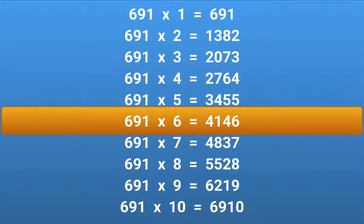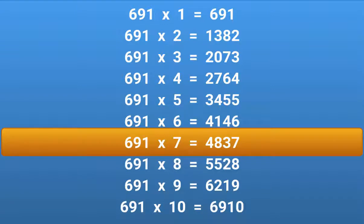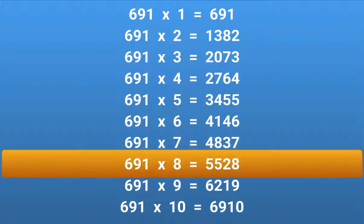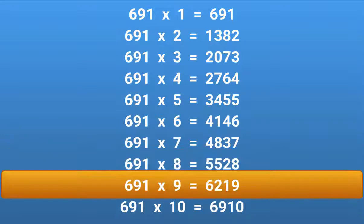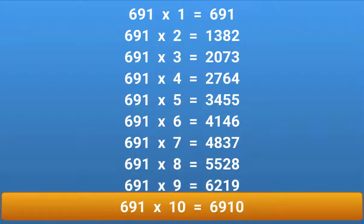691 × 6 = 4146. 691 × 7 = 4837. 691 × 8 = 5528. 691 × 9 = 6219. 691 × 10 = 6910.